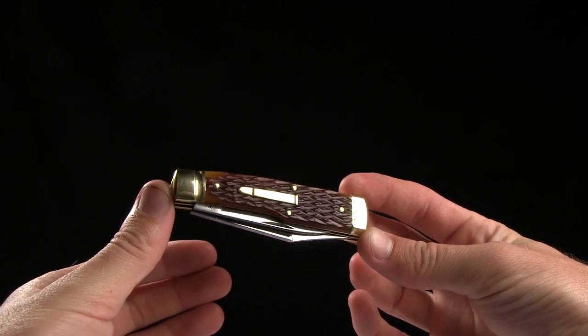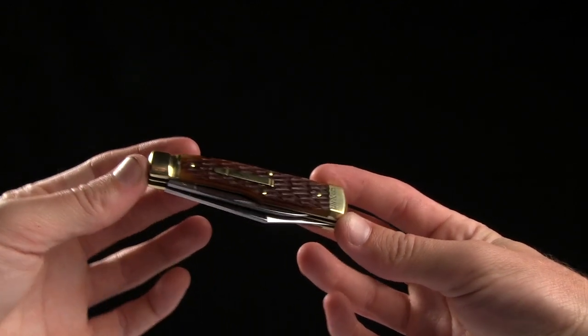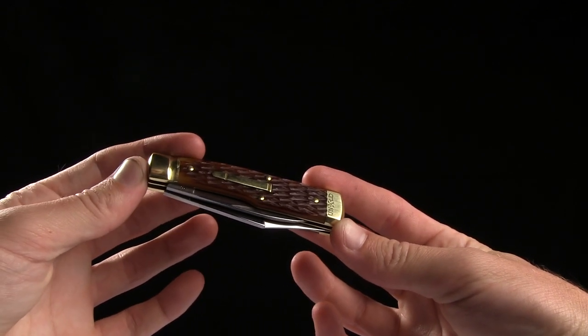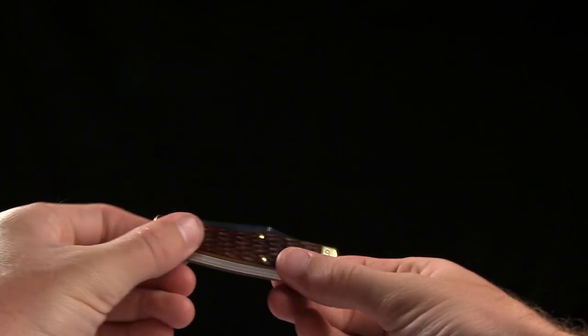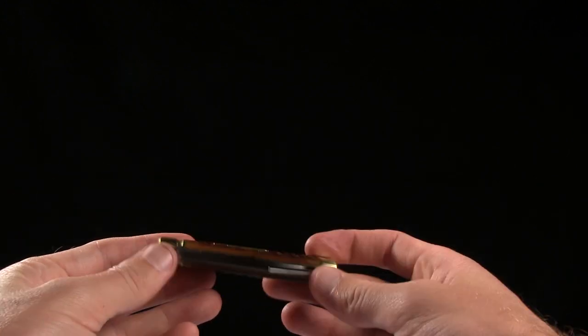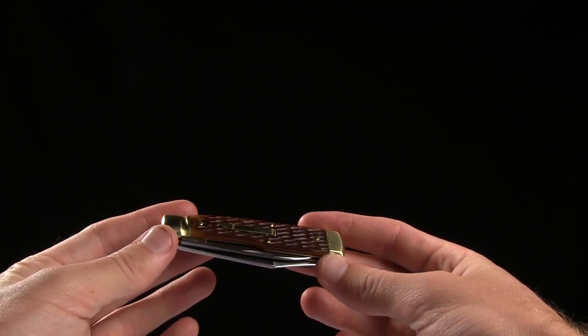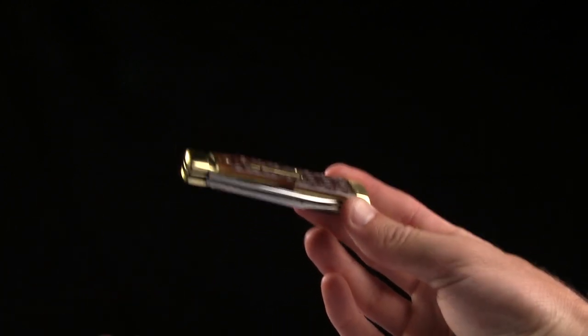The handle length is 3.5 inches. And as I said before, this one has the Autumn Gold Jigbone, but there are plenty of other variations. I believe there's a linen micarta and several different colors. So check out those ones as well.